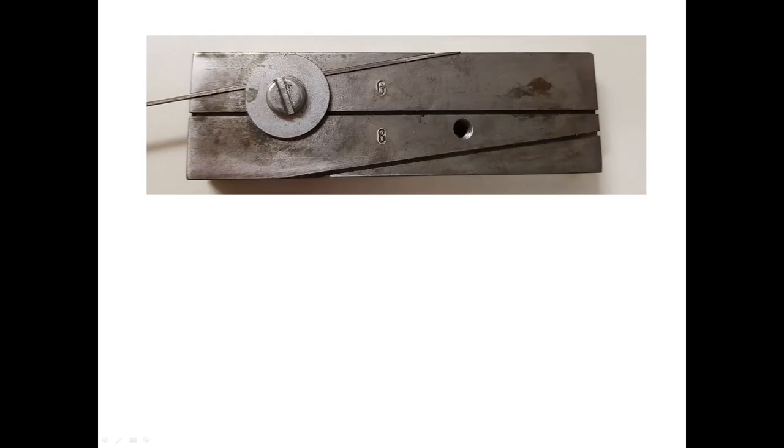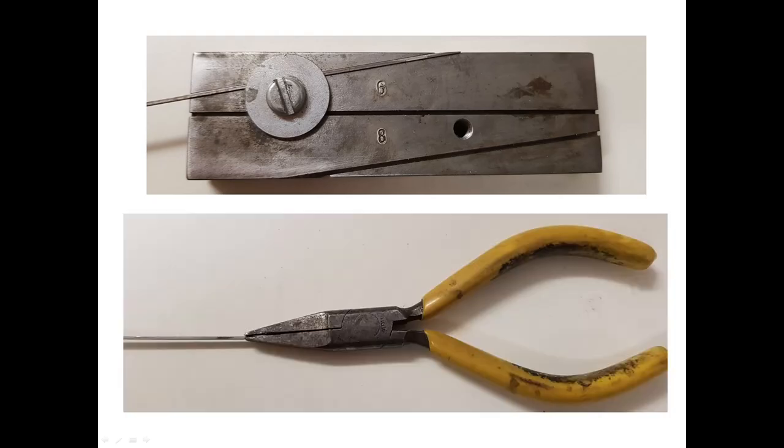Next, remove the rail from the jig and carefully clean up any burrs. The tip is quite fragile. Then use a pair of smooth-jawed pliers to bend the filed portion so that it's parallel to the other side of the rail.